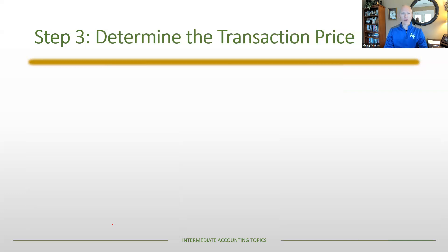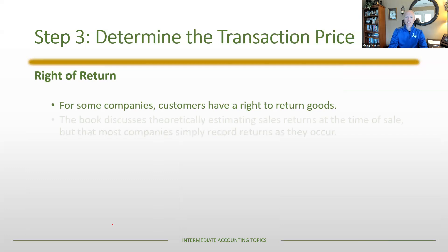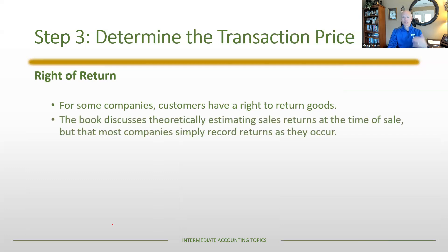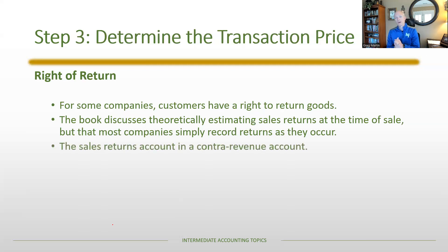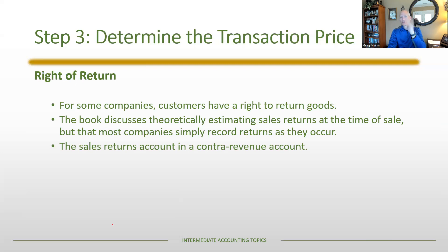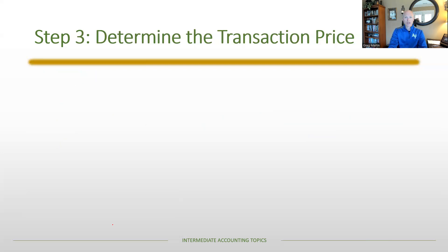The next scenario is a right of return. Sometimes you make a sale and the customer has a right to return the goods. Rather than estimating returns at the time of sale, most companies record an adjustment when the return actually occurs as a contra revenue account — a sales return. You do not reduce sales revenue directly; instead, you record a sales return. More detail on this will come in the next chapter.